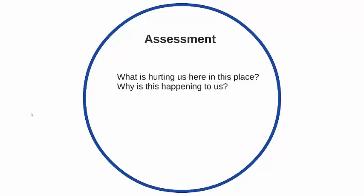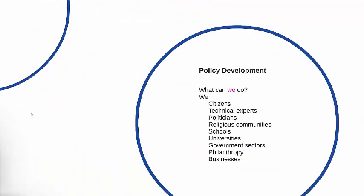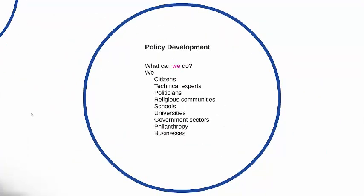First is assessment: what is hurting us here in this place, and why is this happening to us? These are basic questions in epidemiology and social epidemiology, and every community needs the ability to assess these questions. Assessment includes participatory community assessment — having the people involved in knowing what the health threats are. Policy development answers the question, 'What can we do?' — with the emphasis on 'we.' It includes citizens, technical experts, politicians, religious communities, schools, and universities — they all have to be part of understanding the problem and come together to address policy.